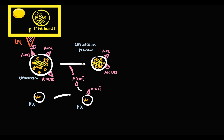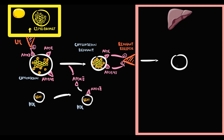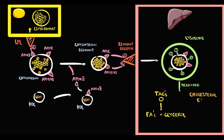The chylomicron remnant then comes to the liver and binds via ApoE and ApoB48 to the remnant receptor on the surface of hepatocytes. Once the chylomicron binds, the liver takes up and degrades the chylomicron remnant in the lysosomes. Enzymes degrade it into smaller particles: most triacylglycerols are degraded into fatty acids and glycerol, and cholesterol esters are degraded into cholesterol and fatty acids.